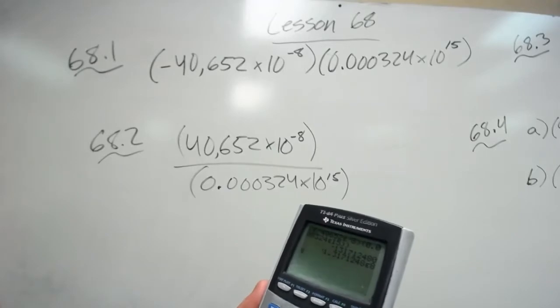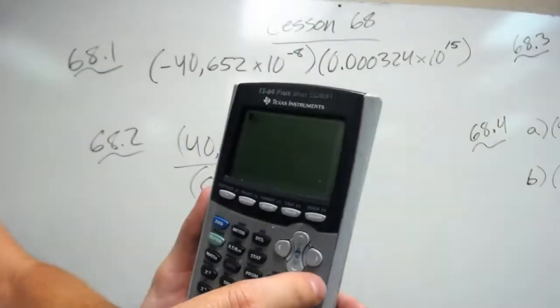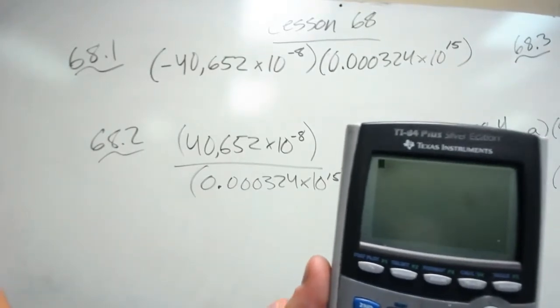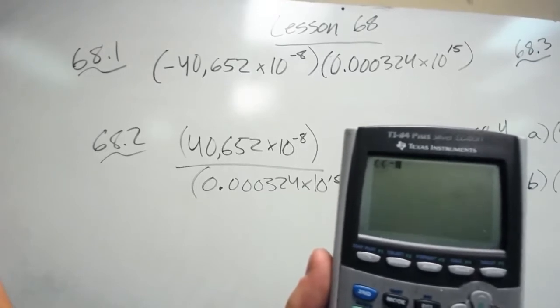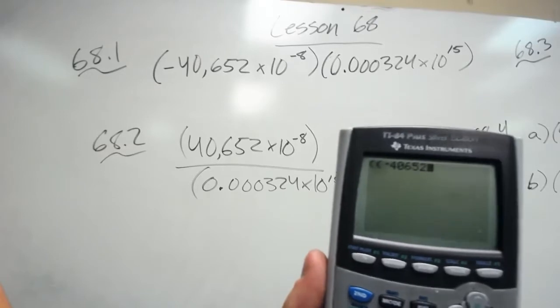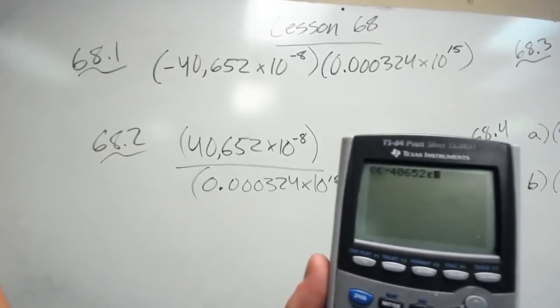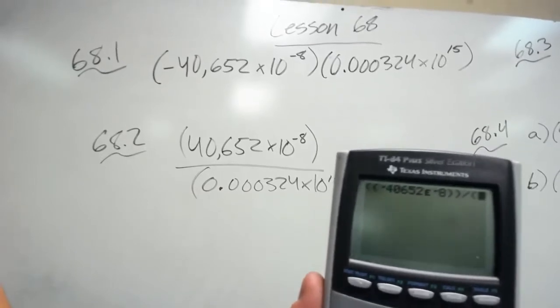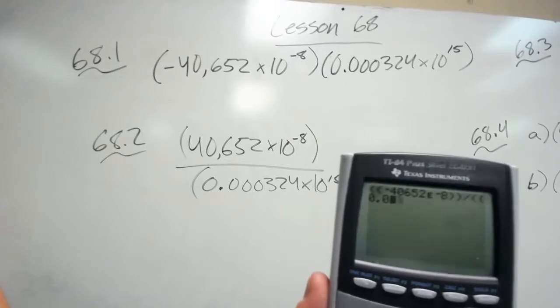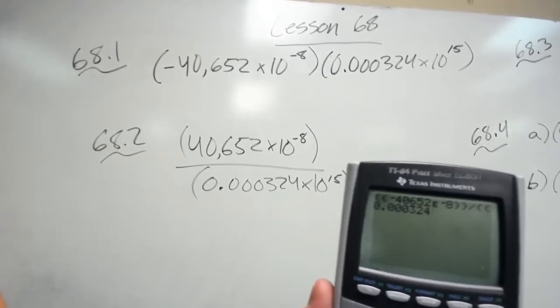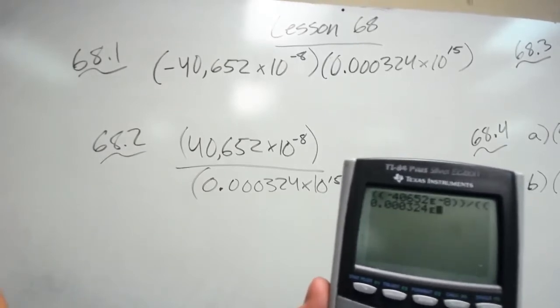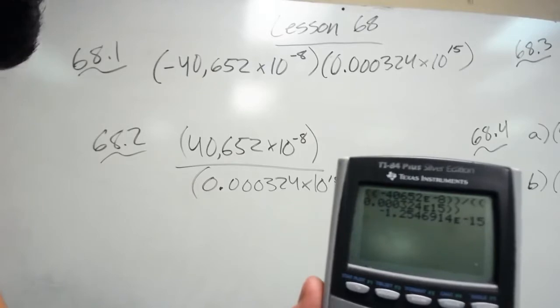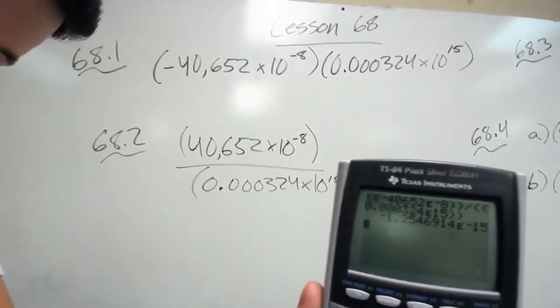Let's look at example 68.2. It's going to be easier if you can just look in your book and type it in on your own. So this one's division of the same numbers. So I push parentheses. I'm going to go ahead and double it up. Negative 40,652 times 10 to the negative 8th power, double close parentheses, divided by, I do double parentheses again, 0.000324 times 10, so second comma, to the 15th power, double close parentheses, bada bing, bada boom, negative 1.25 roughly times 10 to the negative 15th power. And that's how you type it into your calculator.